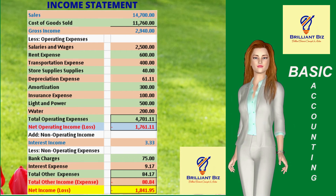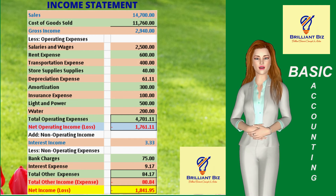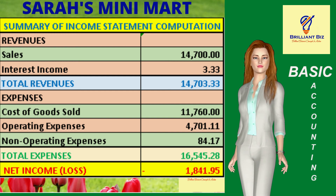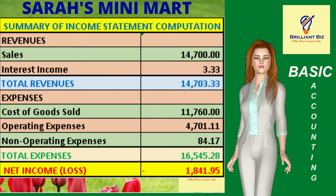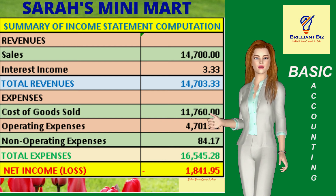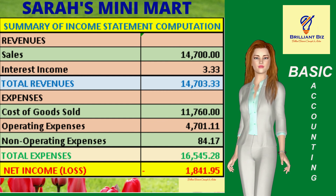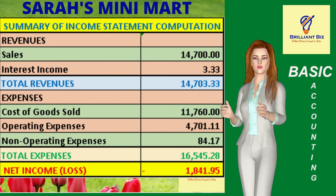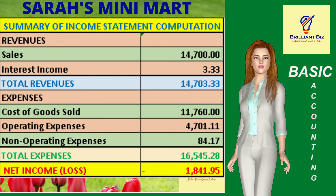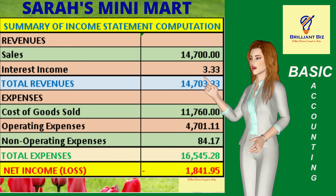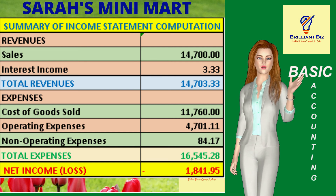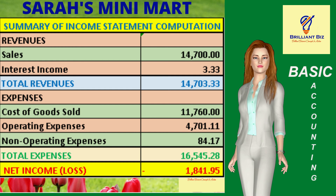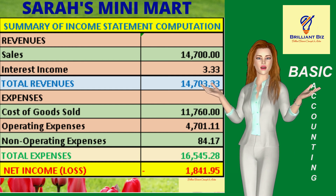This negative $1,841.95 represents the difference between total revenues of $14,703.33 and total expenses of $16,545.28 for the month of September 2020. Total revenues of $14,703.33 is derived by adding total sales of $14,700 and interest income of $3.33. Total expenses of $16,545.28 is the sum of cost of goods sold of $11,760, operating expenses of $4,701.11, and non-operating expenses of $84.17.